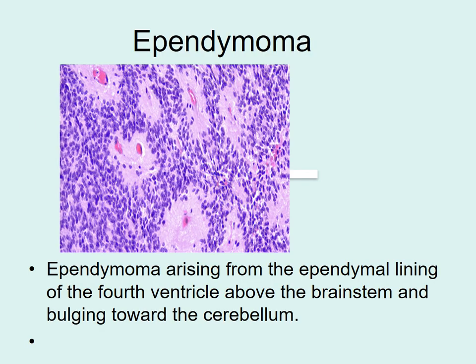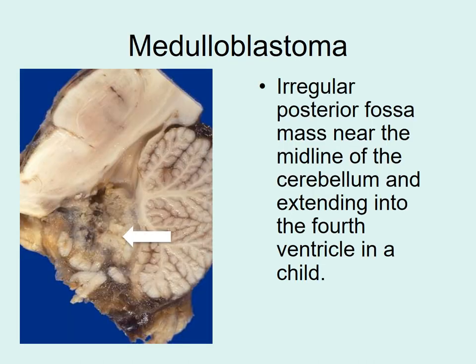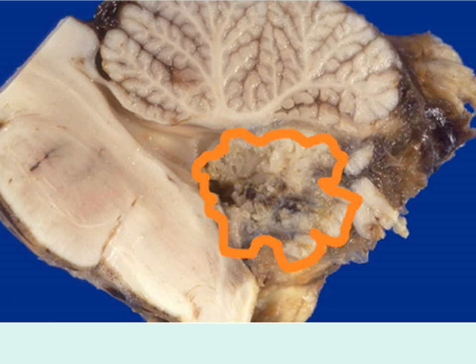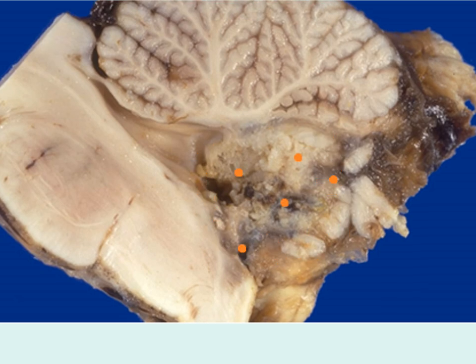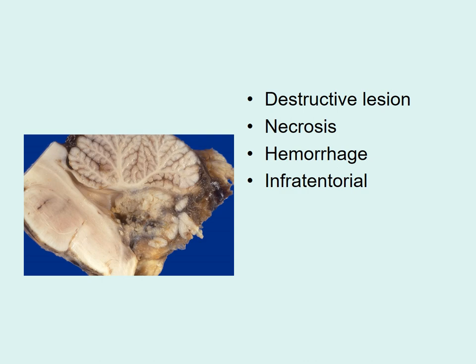Ependymomas arise from the ependymal lining of the fourth ventricle above the brain stem, bulging toward the cerebellum. Next is medulloblastoma — a malignant tumor arising in the posterior fossa, usually infratentorial, occurring in children. Closely examining the gross specimen, it has infiltrating margins and different shades indicating necrosis and hemorrhage. The cut surface is heterogeneous with an irregular outline, making it a destructive lesion showing necrosis and hemorrhage.